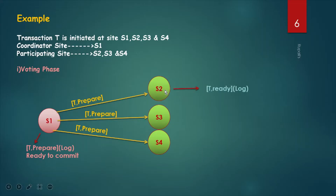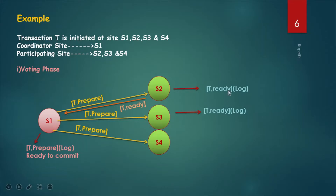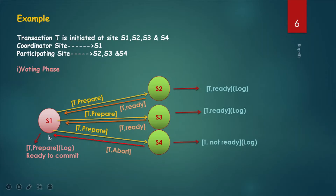If site S2 is ready to commit, it writes T-ready in its own log. S3 also writes T-ready in its own log, meaning they are ready to commit, and they send that message to the coordinator site. If site S4 is not ready to commit, then T-not-ready is written to the log and T-abort is sent to the coordinator site. Because Two-Phase Commit Protocol ensures atomic commitment, and one site is not ready to commit, the transaction will be aborted.